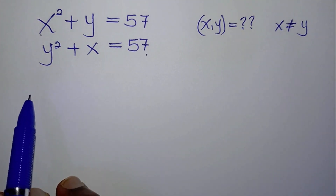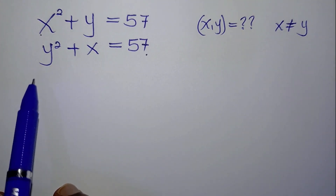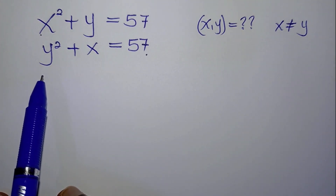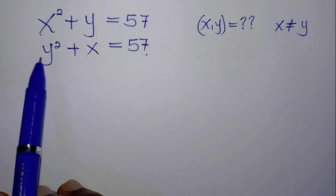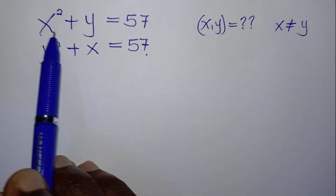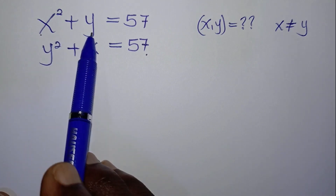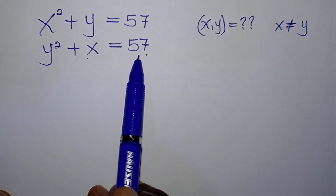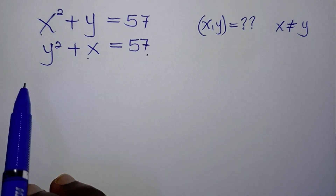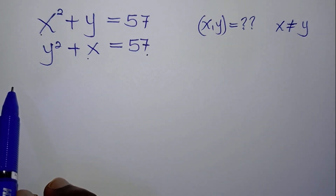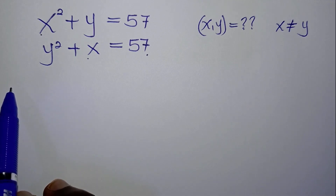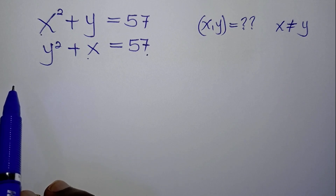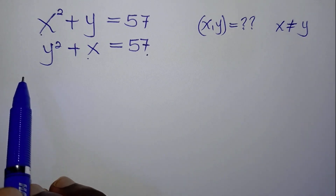Welcome. In this tutorial, we are going to look at how to solve this beautiful simultaneous equation, which is read as x squared plus y equals 57, and y squared plus x equals 57. Before we begin, please do well to subscribe to this channel and hit the notification bell to get notifications anytime I upload new tutorial videos. Now let's get to the solution.